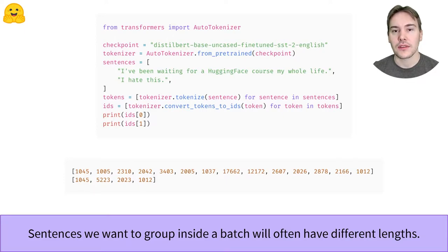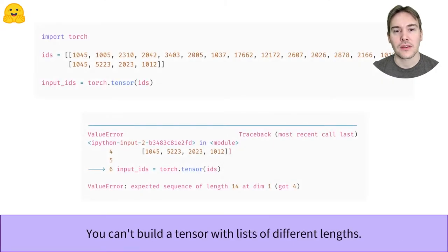Here we are using the model we saw in the sentiment analysis pipeline and want to classify two sentences. After tokenizing them and mapping each token to its corresponding input IDs, we get two lists of different lengths. Trying to create a tensor or an array from those two lists will result in an error because all arrays and tensors should be rectangular.